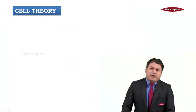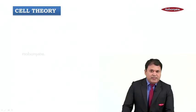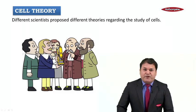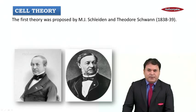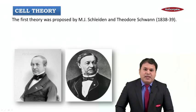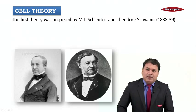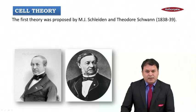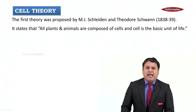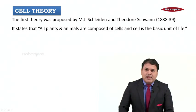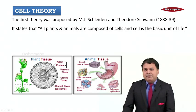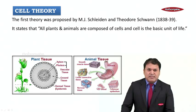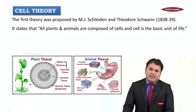Now let's try to understand cell theory. Different scientists proposed different theories regarding the study of cells, which we call cell theory. The first theory was proposed by M.J. Schleiden and Theodore Schwann in the years 1838 and 1839. They proposed that all plants and animals are composed of cells, and cell is the basic unit of life.